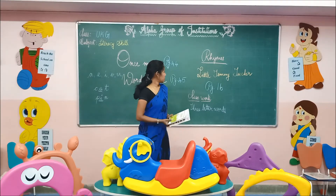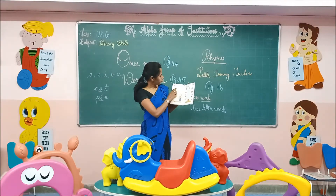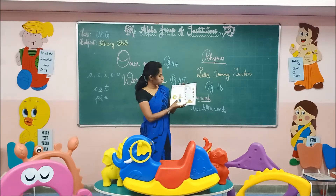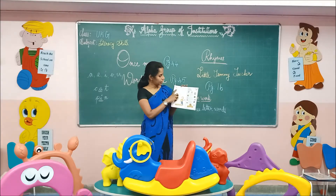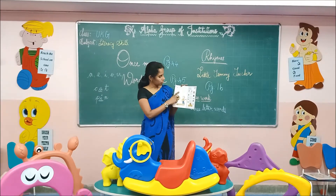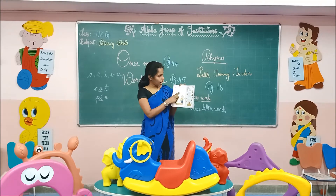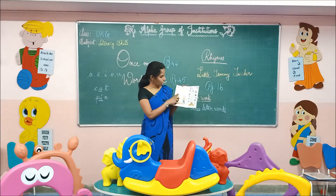It is time for rhymes now. 'Little Tommy Tucker,' in page number 166. I will read the rhymes for you word by word. Next time I will tell you how to recite it. 'Little Tommy Tucker sings for his supper. What shall we give him? White bread and butter. How will he cut it without a knife?'